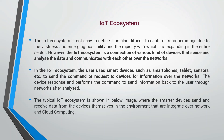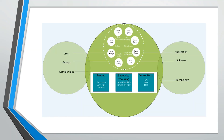In the IoT ecosystem, the user uses smart devices such as smartphones, tablets, and sensors to send commands or requests to devices for information over the network. In a typical IoT ecosystem, you will observe that there are users, groups, and communities; there is an application, software, and technology; and there are sensors, embedded processing, and connectivity. Various IoT applications are getting implemented together into the IoT ecosystem.